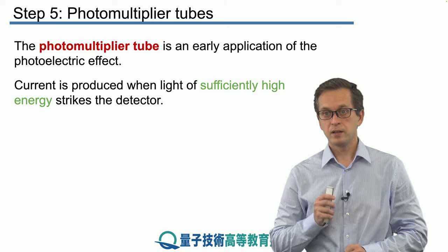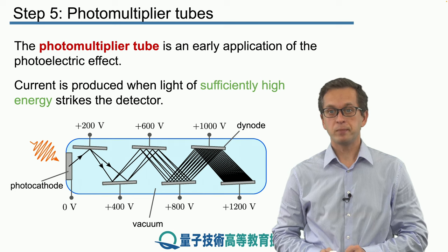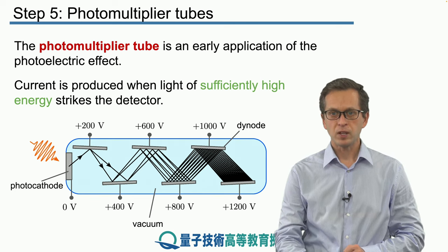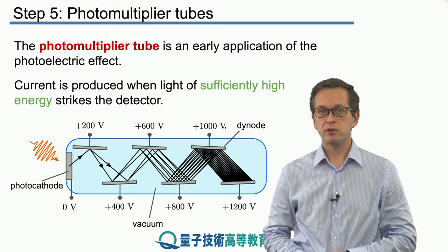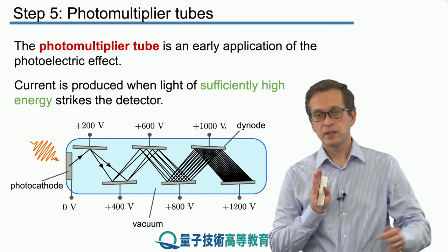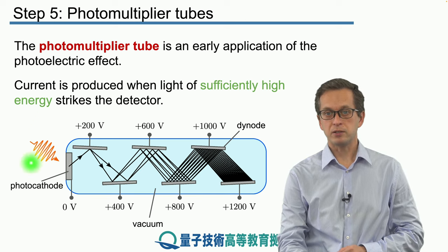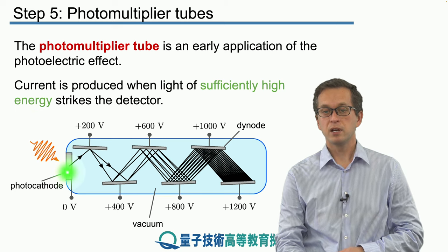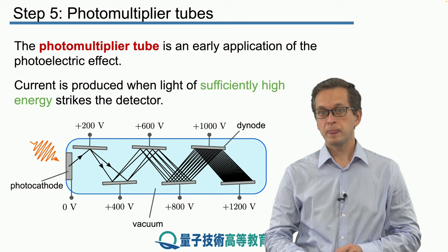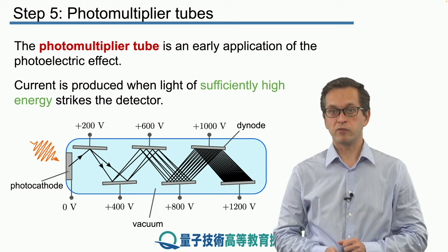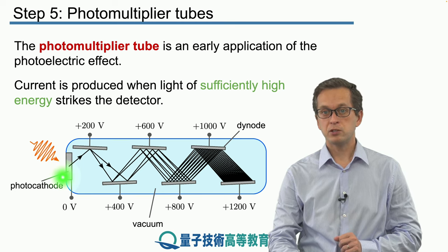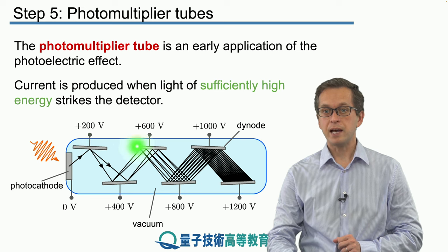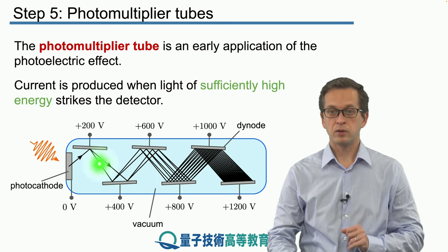The basic setup for a photomultiplier tube is given by the following diagram. We have a vacuum chamber, and at one end we have a photocathode — basically our metal material used as the detector. The photon comes in, represented by a wave packet, and strikes the photocathode. If it has a frequency higher than the cutoff frequency, it delivers energy more than the work function of the metal, and a photoelectron is ejected. To catch this photoelectron, we have a set of dynodes, whose function will be explained shortly.